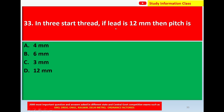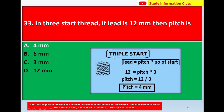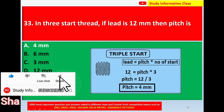Question 33: In a 3-start thread, if the lead is 12 mm, then the pitch is — options: A) 4 mm, B) 6 mm, C) 3 mm, D) 12 mm. The correct answer is option A: 4 mm. We know that for a multi-start thread: Lead = Pitch × Number of starts. For a 3-start thread, Lead = Pitch × 3.